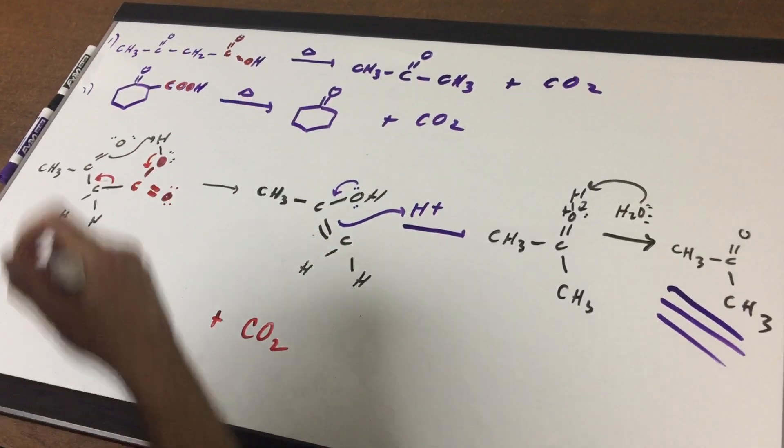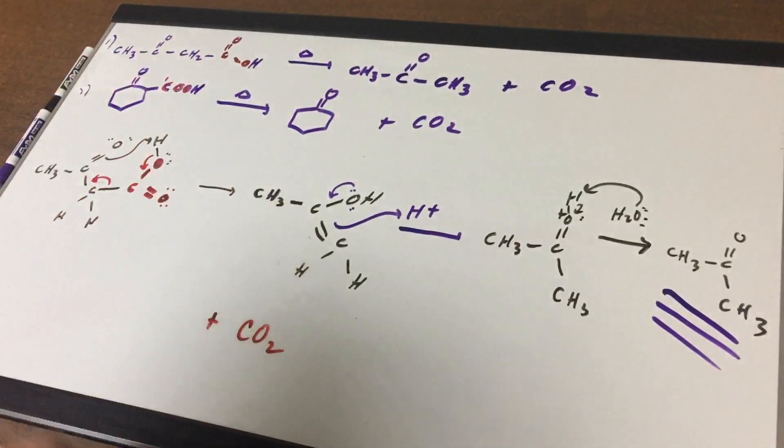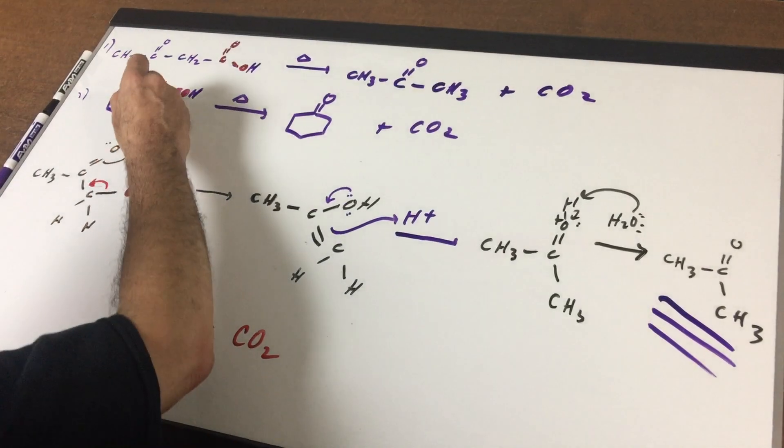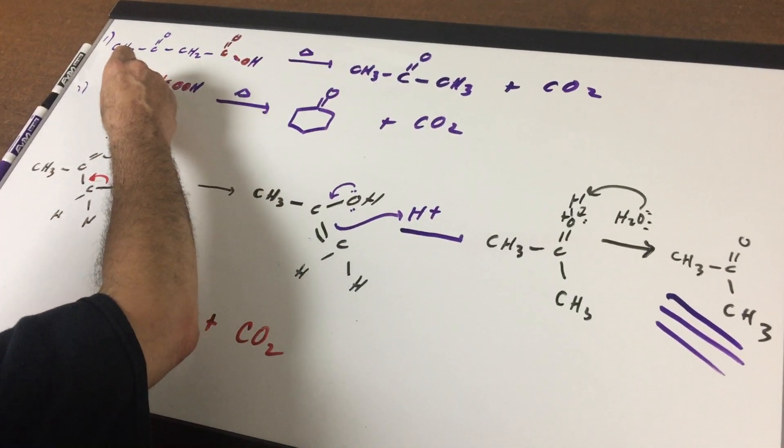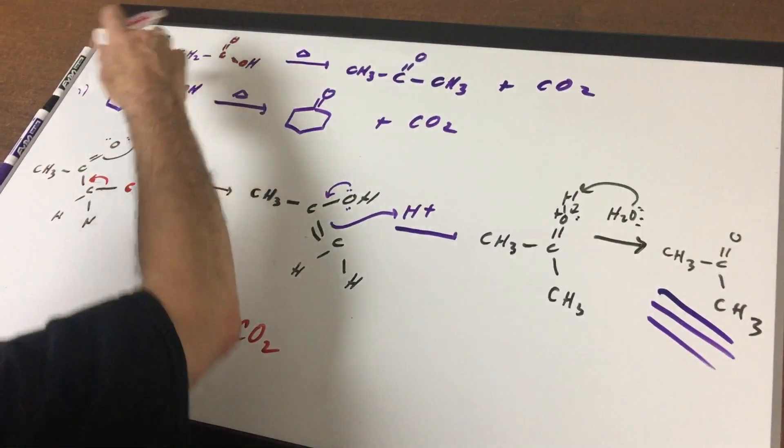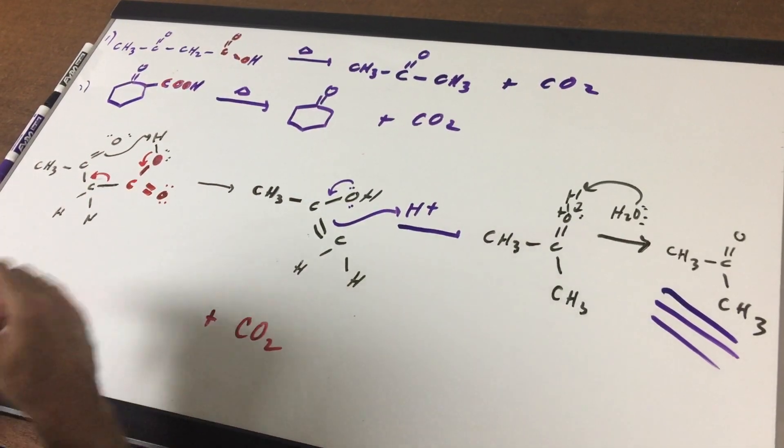Likewise, number two, again this is your focus, that's the COOH group, think of that as your lead position, this is the alpha position and this is the beta position, so I would call that a beta keto acid.